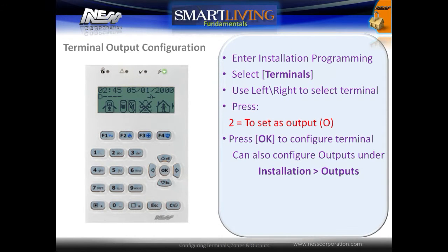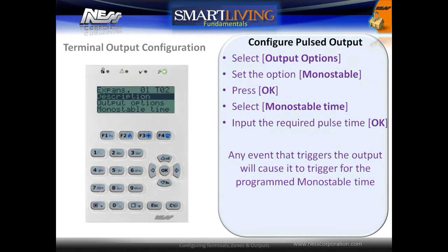To program a terminal as an output, enter into installation programming and select the Terminals menu. Use the left and right arrows to select the terminal and press the number 2 to set the terminal as an output. To configure the terminal, press OK, or configure all outputs under the Outputs menu in installation programming. To configure an output to be a timed pulsed output, select the Output Options.